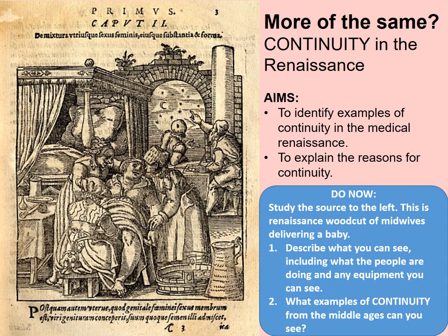Here's a do-now task. Study the source to the left. This is a Renaissance woodcut of midwives delivering a baby. A woodcut was an image carved into a piece of wood so that it could be printed many times. Firstly, describe what you can see, including what the people are doing and any equipment. Secondly, what examples of continuity from the Middle Ages can you see? Pause the video while you complete those tasks.